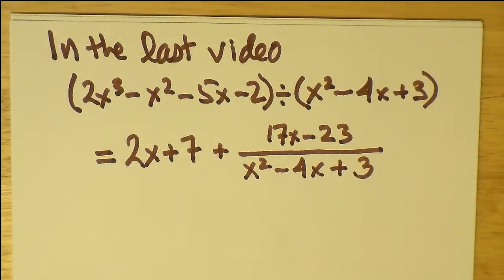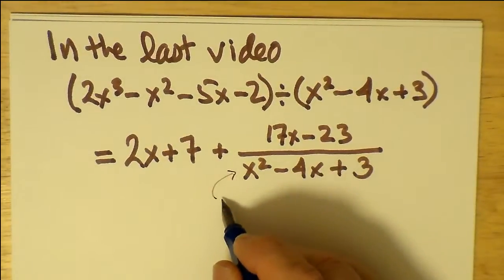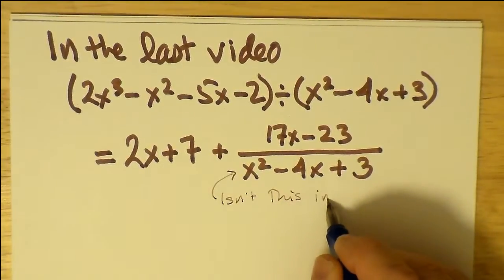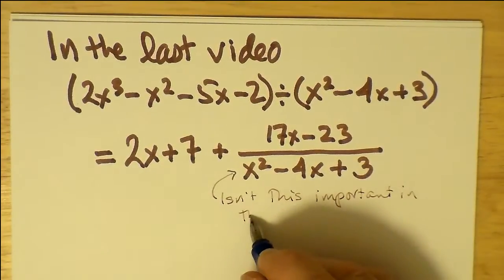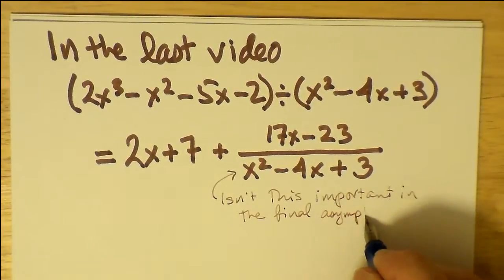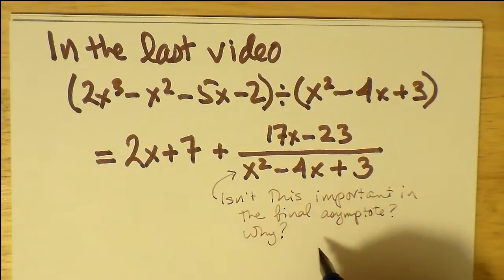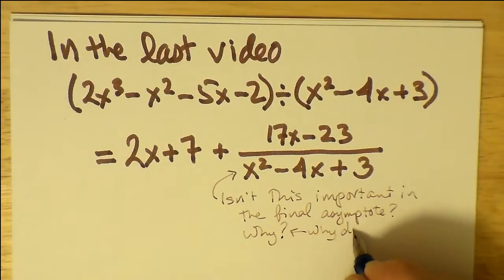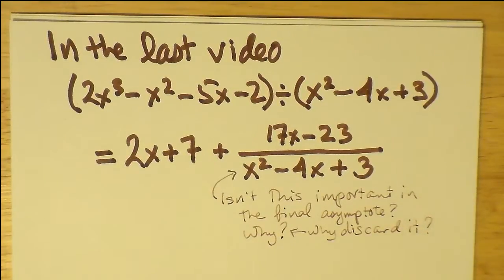Now in the last video, we just had this situation. And the only problem is, we want to seek an answer to why discard this rational function. Isn't it important? And does it have anything to, does it affect our line? And we will find out that actually it doesn't affect the line at all. In fact, we can simply go with 2x plus 7 as our linear asymptote and lose no information in terms of what the oblique asymptote is, or what we call the slant asymptote.